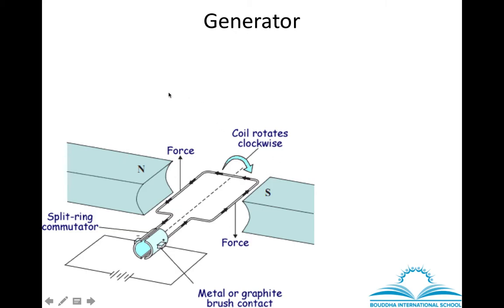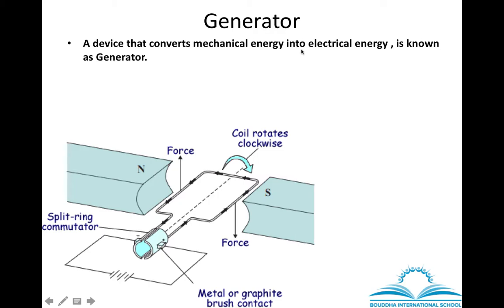The working principle of a generator and a dynamo are the same. The magnets are kept and between the two poles of the magnet the wire is kept. Magnetic lines of force always move from north pole to south pole. Once we start rotating the wire, the magnetic flux starts changing, and just like the bicycle dynamo, electrons start moving through the wire and current is produced. This is how the generator functions — it converts mechanical energy into electric energy.